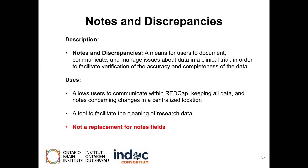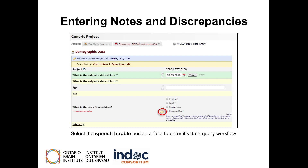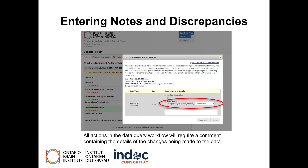Notes and Discrepancies. Notes and discrepancies are a means for users to document, communicate, and manage issues about data in a clinical trial in order to facilitate verification of the accuracy and completeness of the data. Notes and discrepancies allow users to communicate within REDCap, keeping all data and notes concerning changes in a centralized location. The Notes and Discrepancies tool facilitates the cleaning of research data but is not a replacement for notes fields. To enter a note or discrepancy, select the comment bubble next to a field. Select Open Query and then assign the query to a user if needed. All actions in the data query workflow will require a comment containing the details of the changes being made.